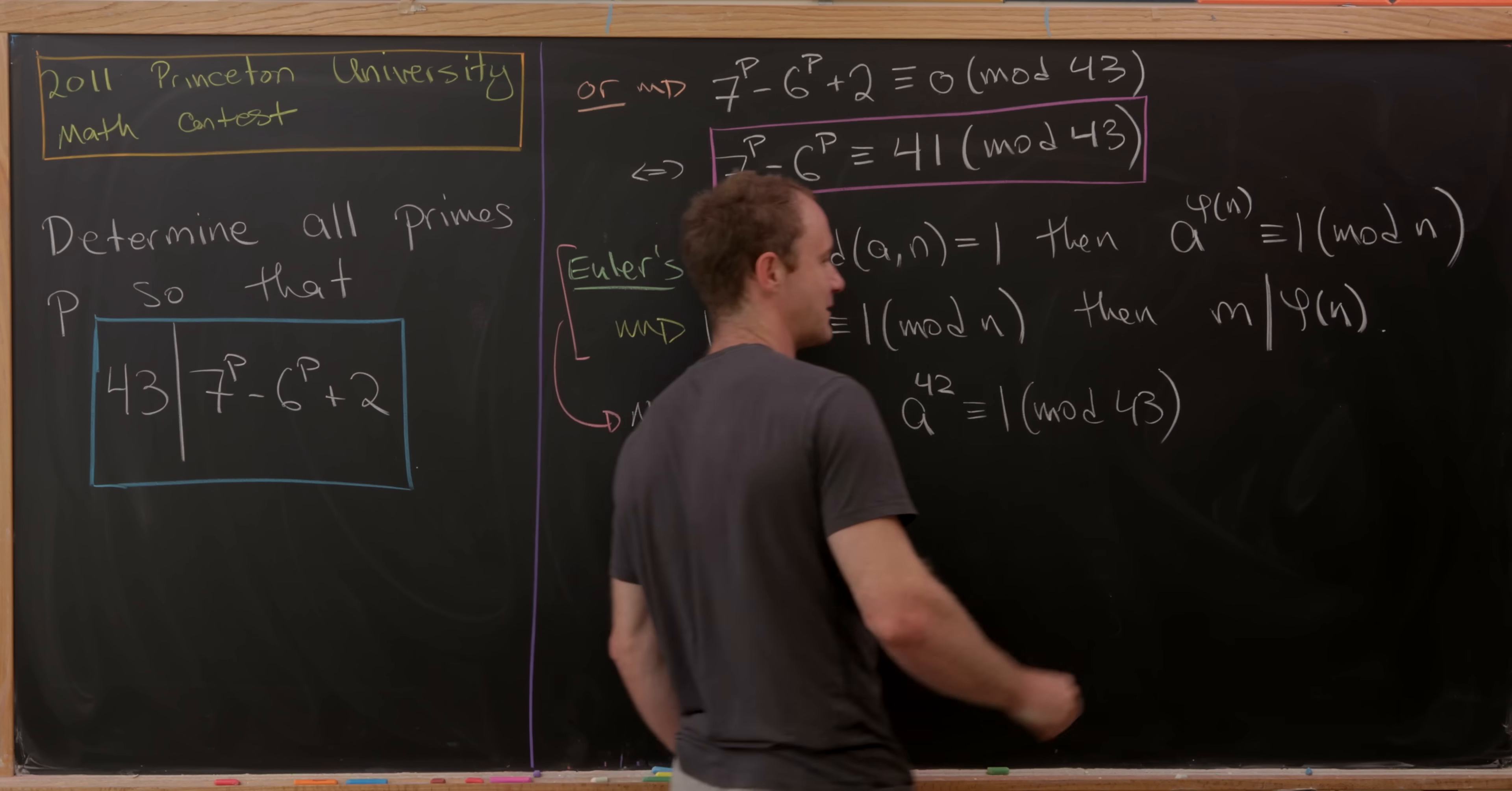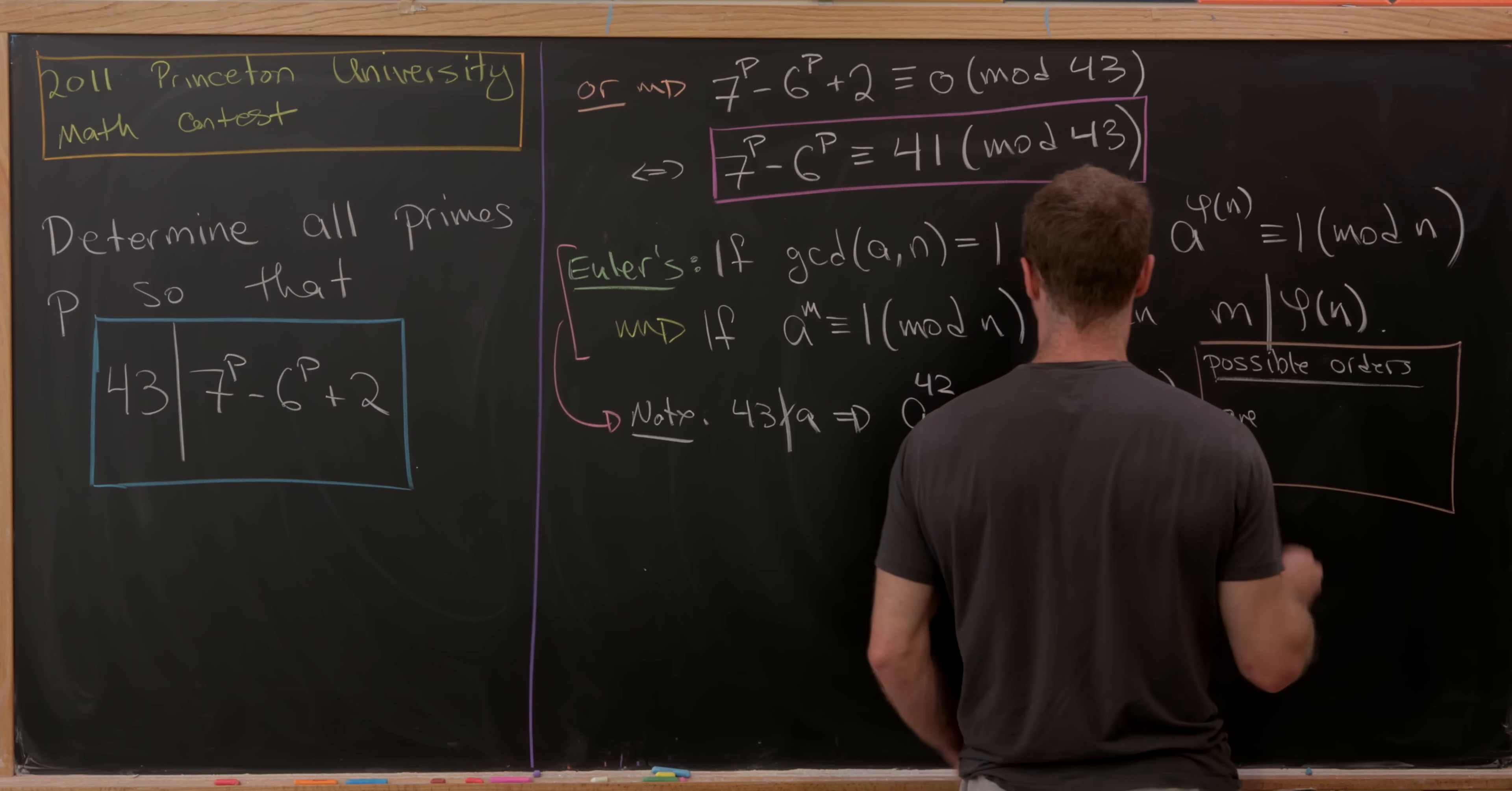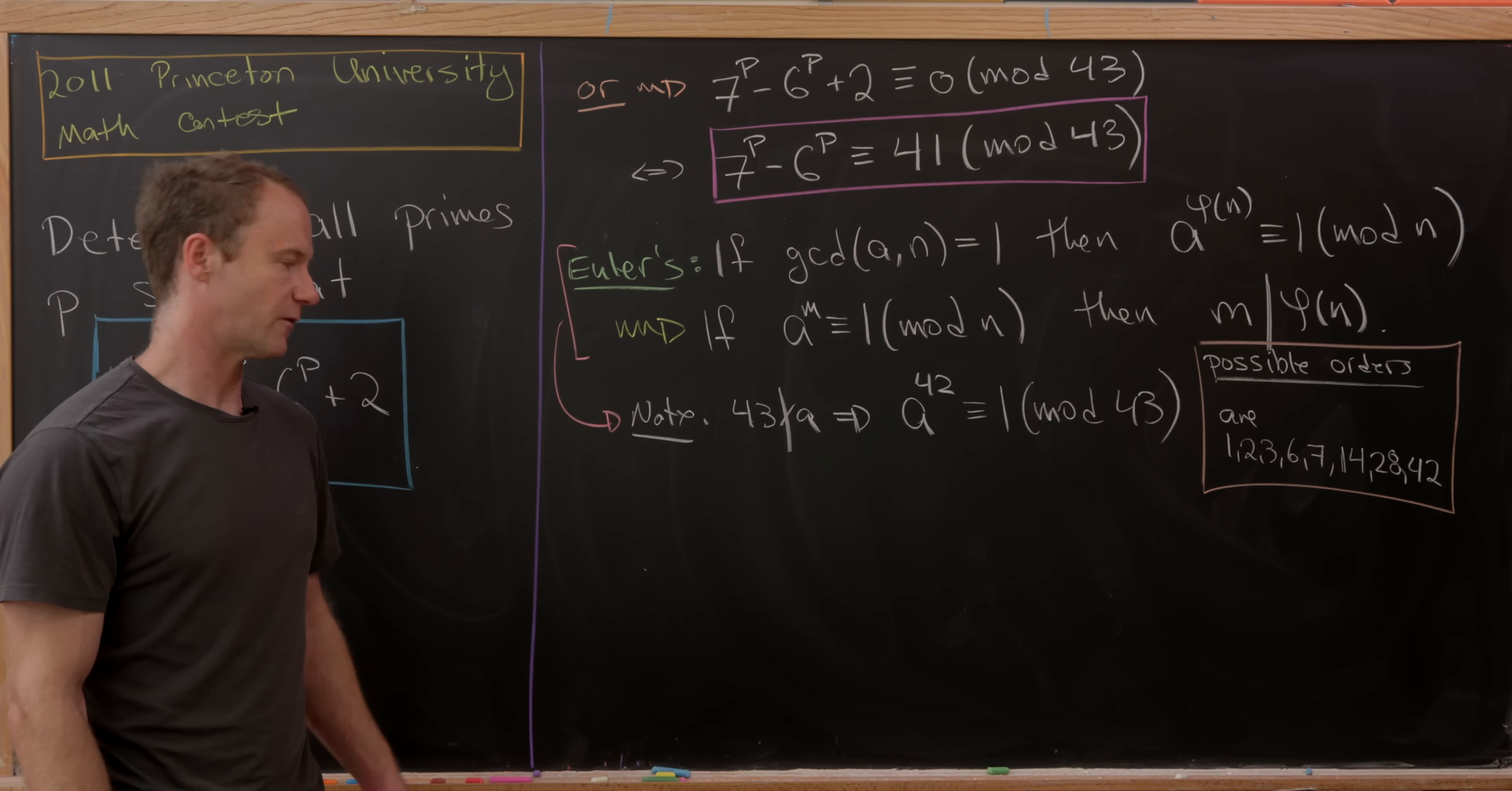What does that tell us about the order of elements? It tells us that the possible orders are divisors of 42. We can write those down pretty easily: 1, 2, 3, 6, 7, 14, 28, and 42. Those are all of the divisors of 42.